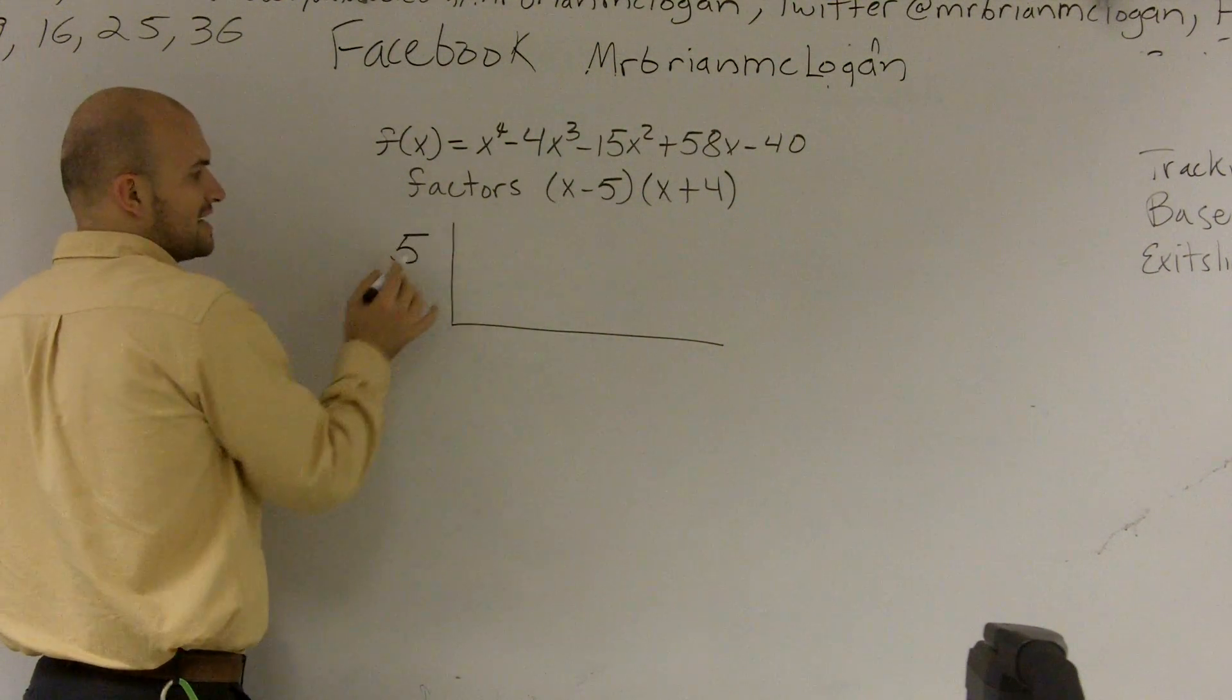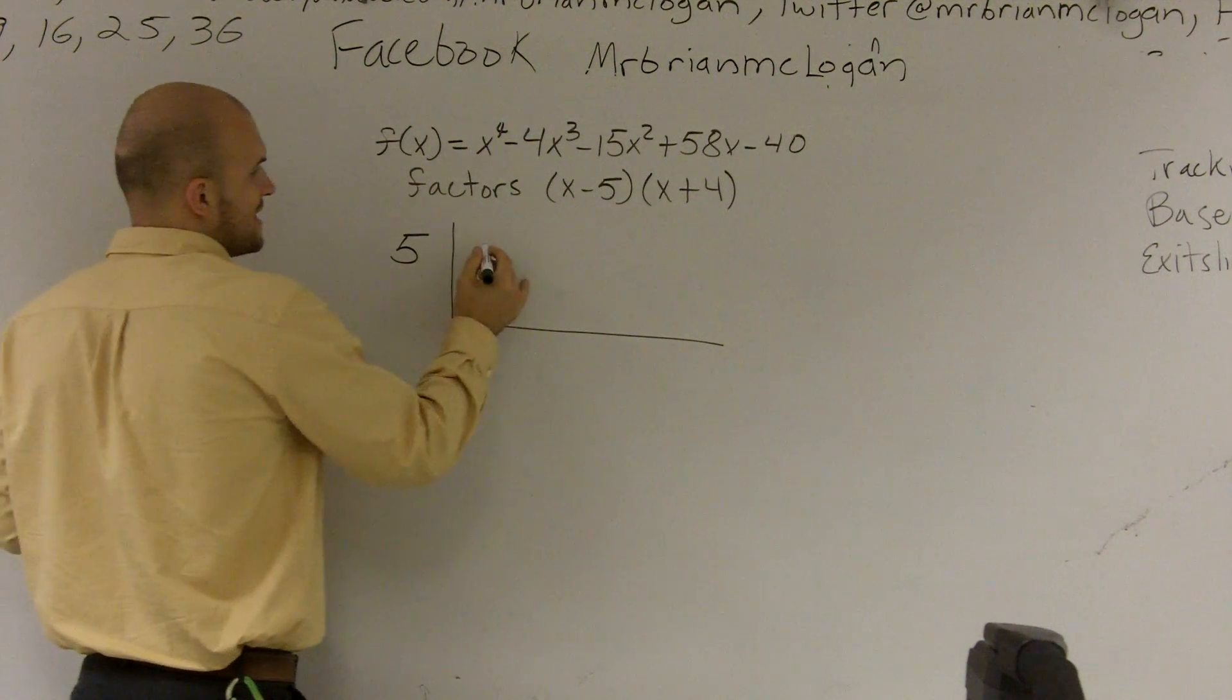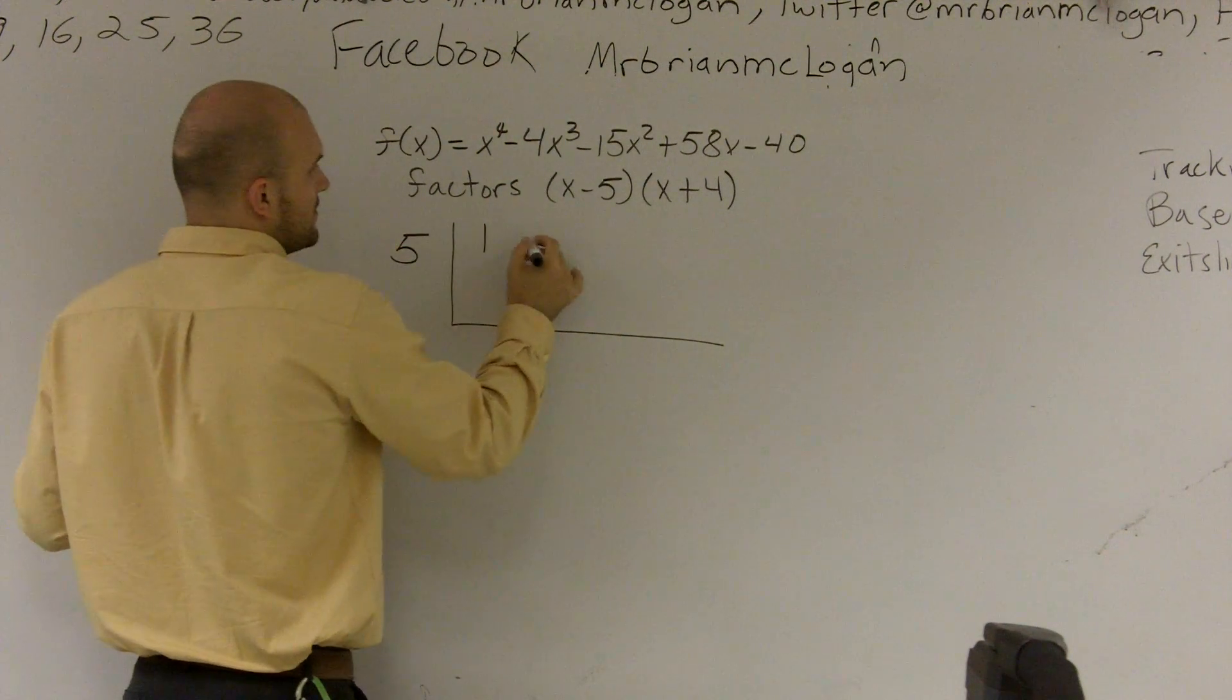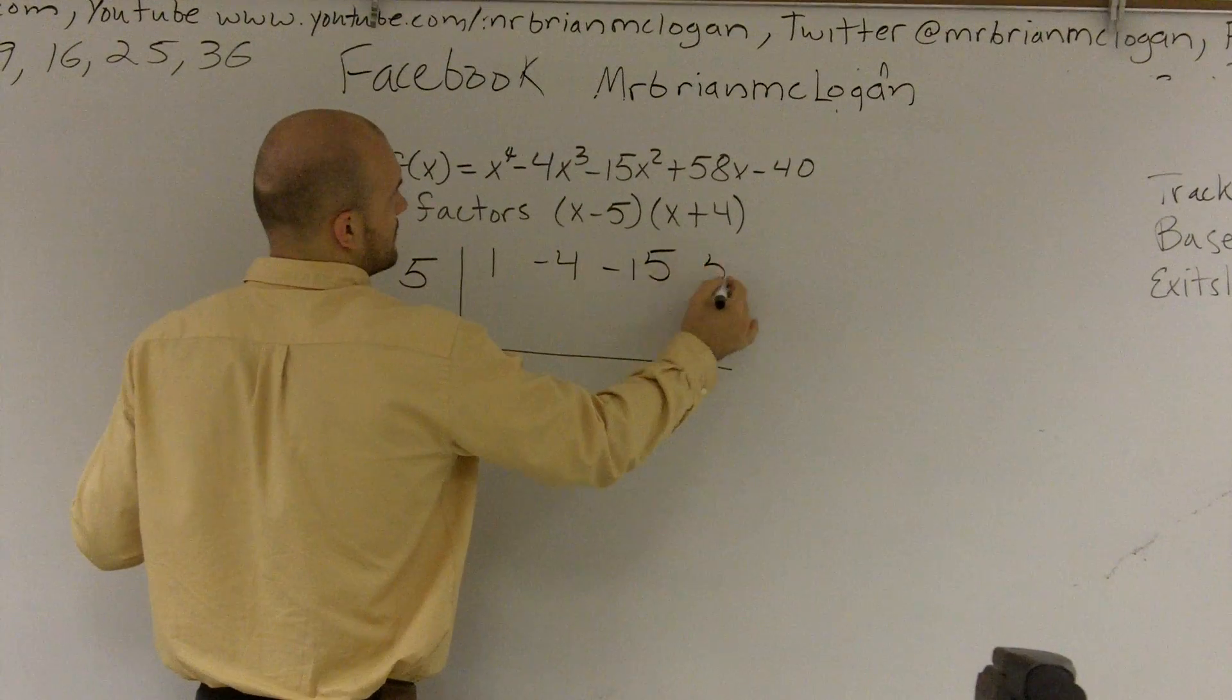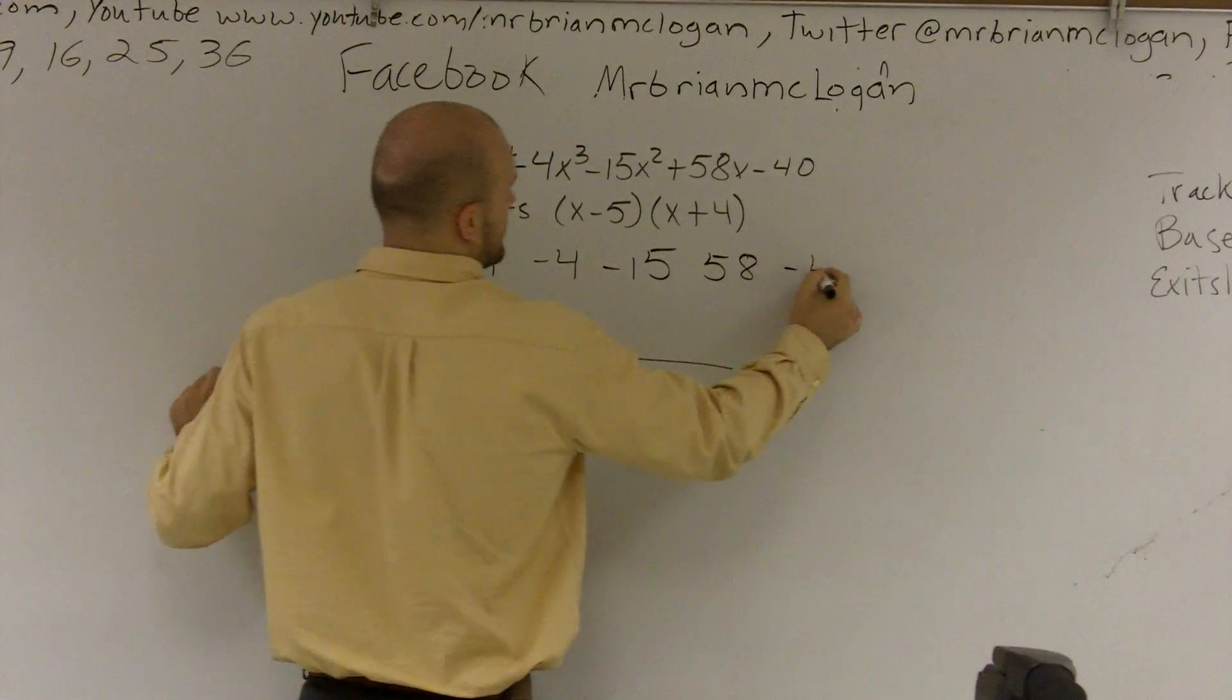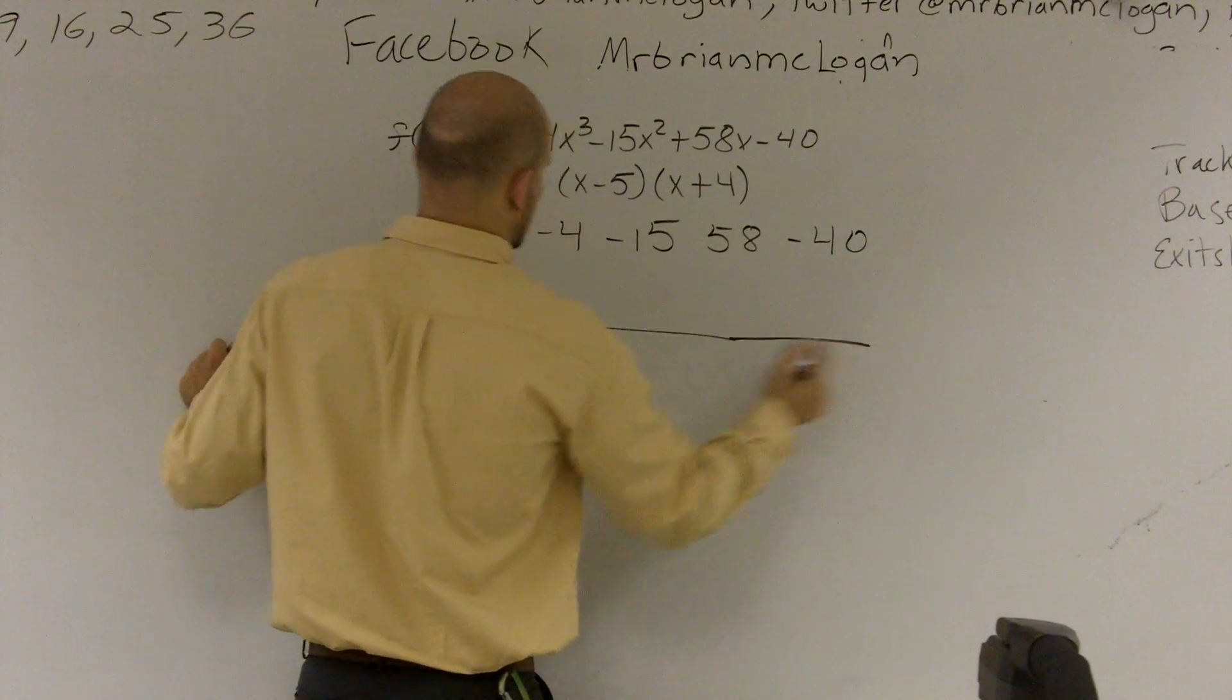Remember, if this is my factor, I take my 0 and put that on the outside. So I represent the coefficients. It's 1, negative 4, 15, 58, and negative 40.